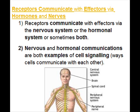Receptors communicate with effectors via hormones and nerves. They communicate via the nervous system or the hormonal system, or sometimes both. Nervous and hormonal communications are both examples of cell signaling — the way cells communicate with each other.